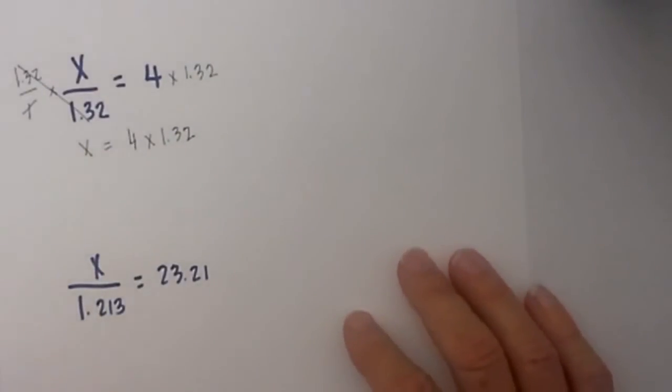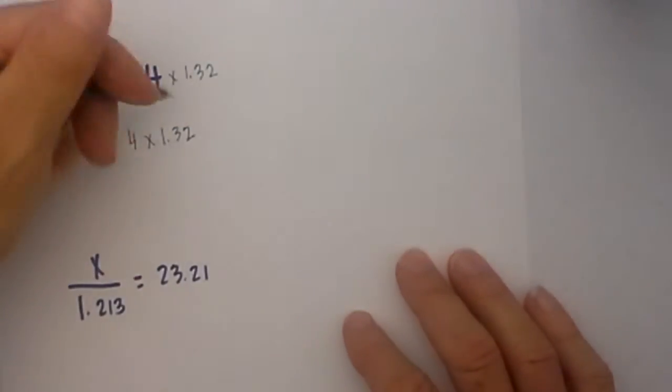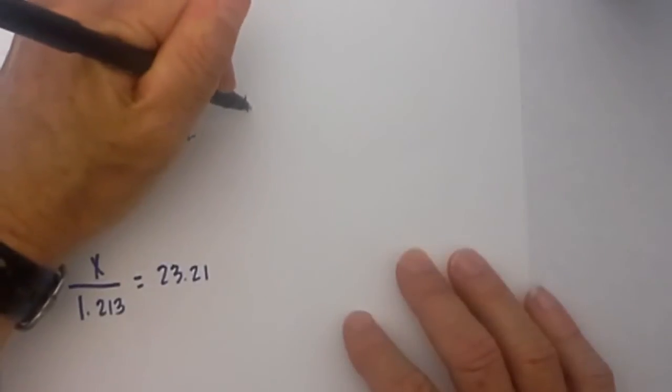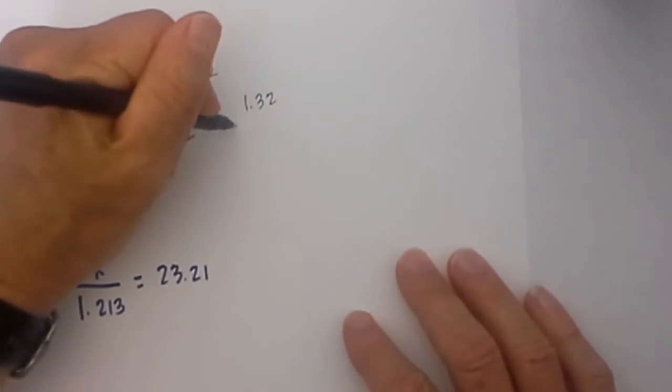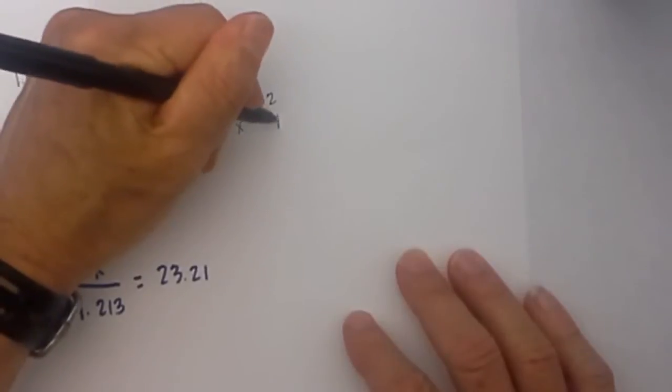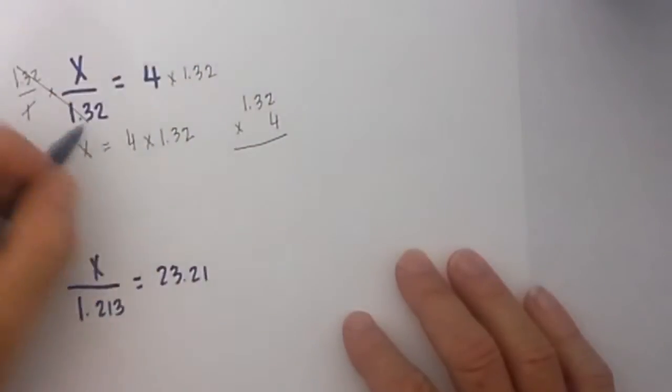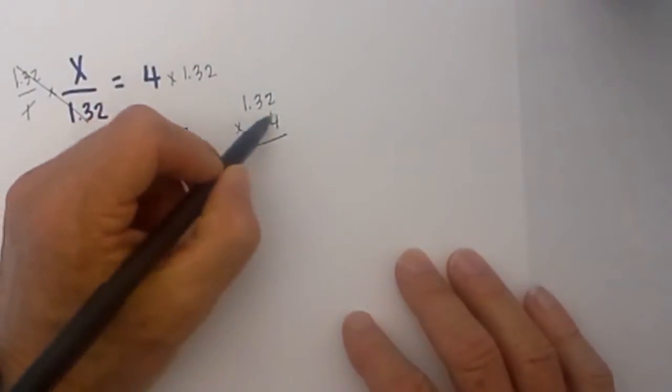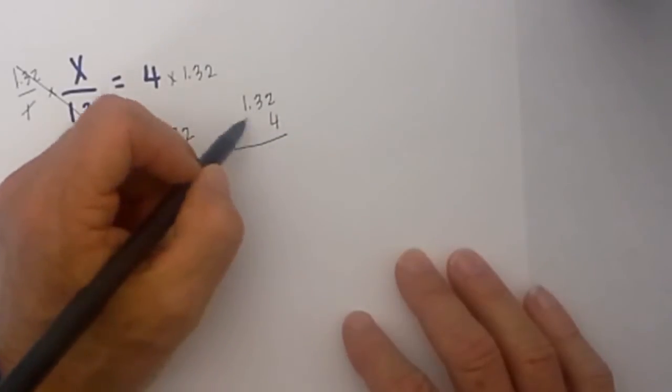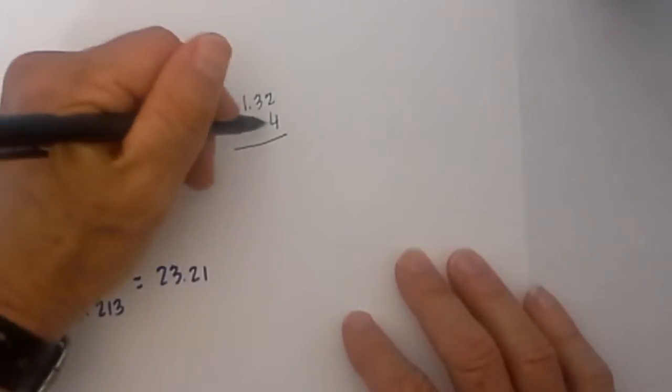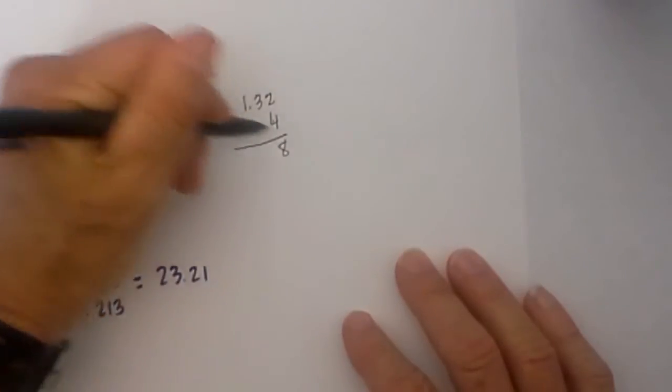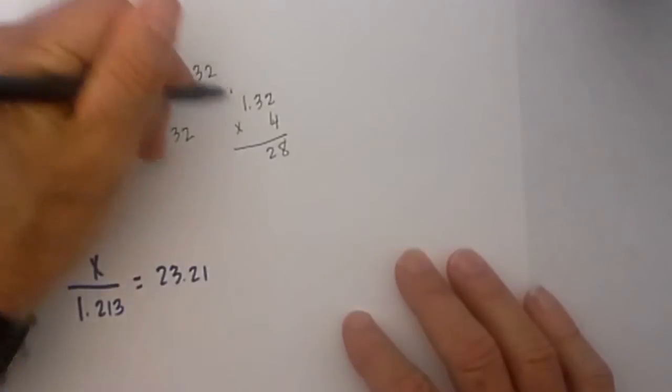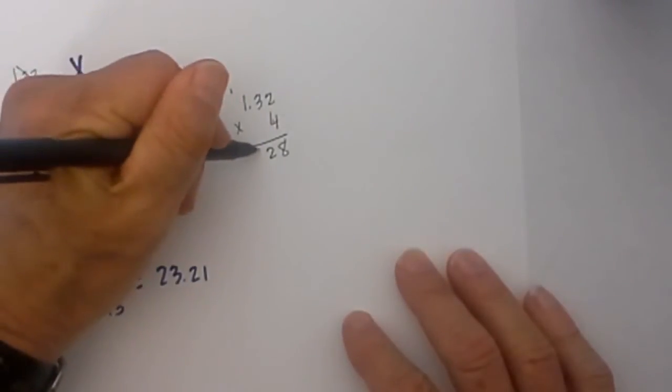Now when you multiply decimals, I will rewrite it to where you have 1.32 times 4. I generally like to place the larger number on top, I just think it is easier to see it, and then we just multiply. At this point I don't worry about the decimal, I just multiply and then later I count how many numbers are to the right. So we have 4 times 2 is 8, 4 times 3 is 12, 4 times 1 is 4, plus 1 is 5.